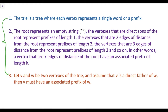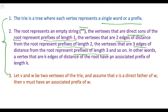These are the main ideas of the trie data structure. The first idea is that the trie is a tree where each vertex represents a single word or a prefix. The second is the root represents an empty string. Vertices that are one edge from the root represent a prefix of length 1, vertices two edges from the root represent a prefix of length 2, and so on. In other words, a vertex that is k edges from the root has an associated prefix of length k, formed by adding k characters continuously from the root.